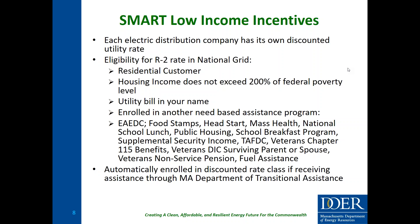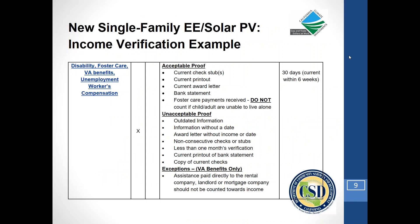Glenn added: for the multifamily program, we'll be monitoring this moving forward as more market rate properties enter our pipeline. Our guidelines document has a descending order of priorities — pay stubs or tax returns are the first choice, and if that proves problematic, property owners and our consultant can move to public assistance program documentation for categorical eligibility.